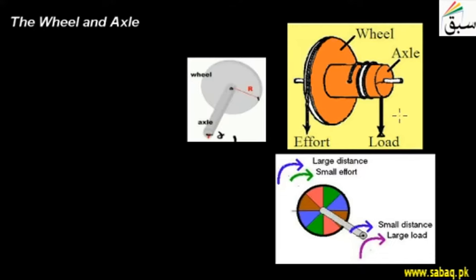As a result, the load moves from the axle. If we look at the axle and wheel, the axis of rotation is the axis around which the body rotates, which is shown as the white pipe. This pipe is called the axis of rotation. That means the axle and wheel both rotate around the axis of the white pipe.